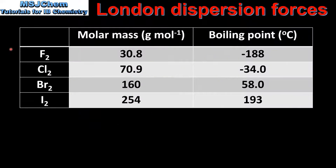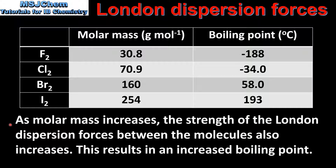Next we look at the effect of molar mass on the strength of London dispersion forces. In this table we have the molar masses and boiling points of the group 17 elements: fluorine, chlorine, bromine and iodine. As we go down the group we can see that the molar mass increases, and the same is true for the boiling point. Fluorine has a boiling point of negative 188 degrees C, increasing until we get to iodine which has a boiling point of 193 degrees C. So as molar mass increases, the strength of the London dispersion forces also increases, resulting in an increased boiling point.